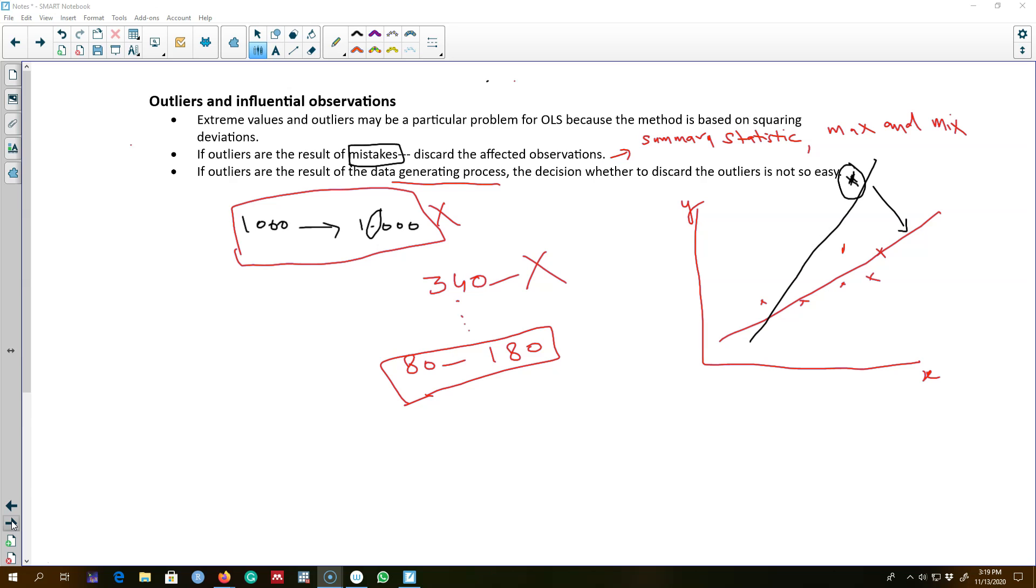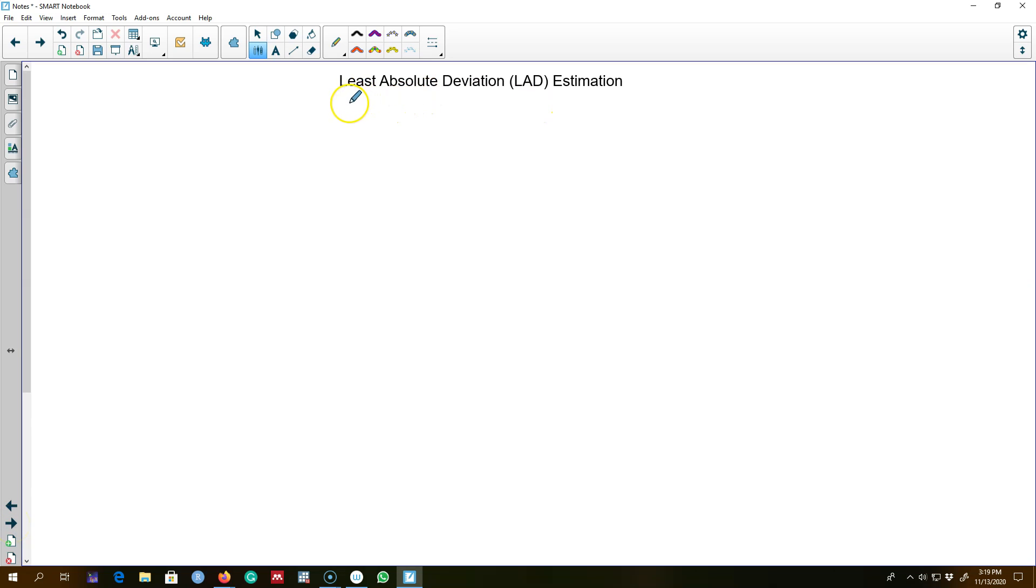And one such method is called least absolute deviation method. Remember in OLS what we were trying to do was we were trying to minimize the sum of square residuals from i = 1 to n.